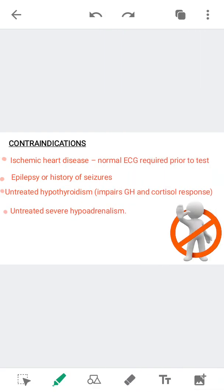The contraindications of the test are ischemic heart disease, epilepsy or history of seizures — because hypoglycemia can trigger a seizure attack — untreated hypothyroidism, because it impairs growth hormone and cortisol response and must be treated first, and untreated severe hypoadrenalism.